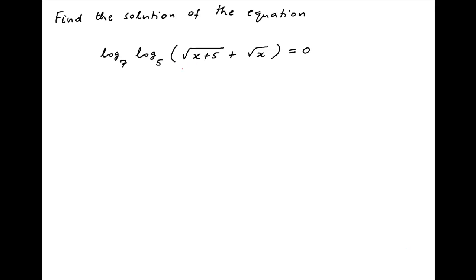The left hand side of the given equation is defined when the expressions under the square root are greater than or equal to 0. Therefore, x plus 5 must be greater than or equal to 0, and x must be greater than or equal to 0. Both of these conditions are satisfied when x is greater than or equal to 0.